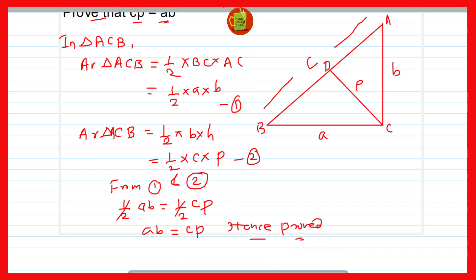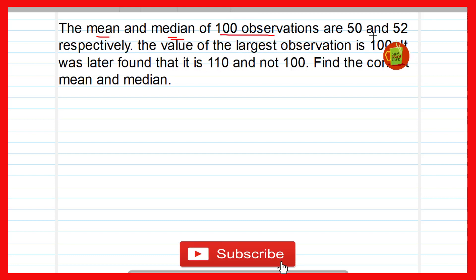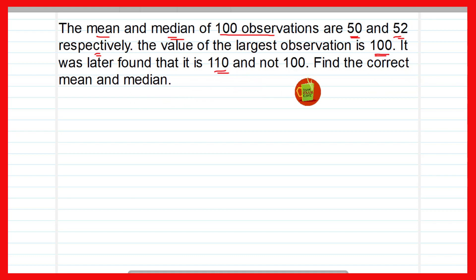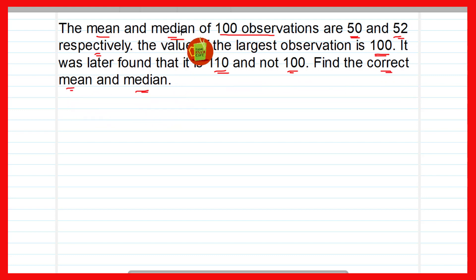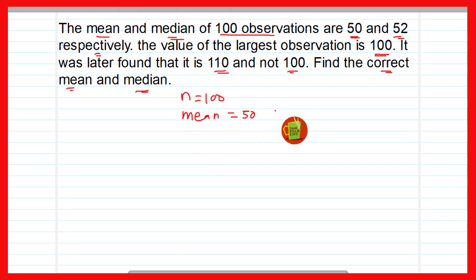Now let us move to the next question. The mean and the median of 100 observations are 50 and 52 respectively. The value of the largest observation is 100. It was later found that it is 110 and not 100. Find the correct mean and median. Mean is given as 50 and median is given as 52.